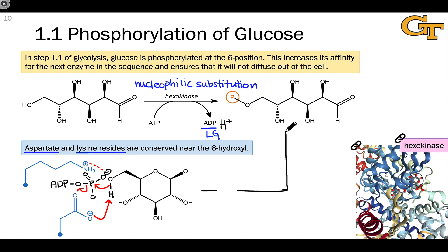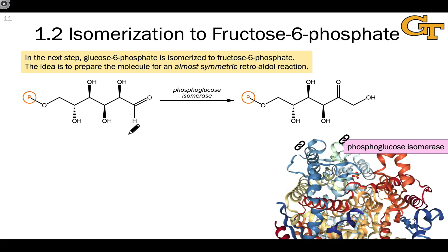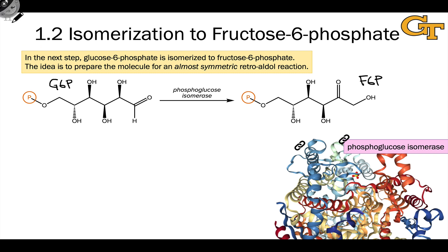The result is selective phosphorylation of carbon-6, and this product is glucose-6-phosphate, or G6P, as we'll call it. In step two of stage one, glucose-6-phosphate, or G6P, is isomerized to fructose-6-phosphate, F6P.